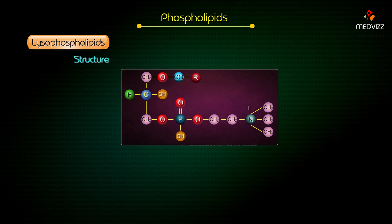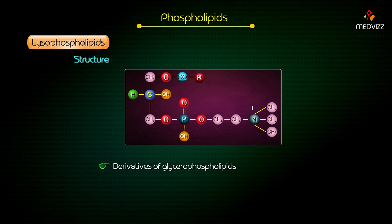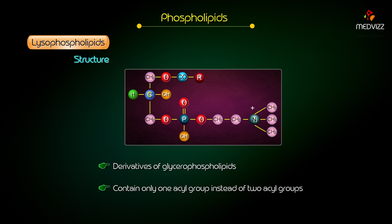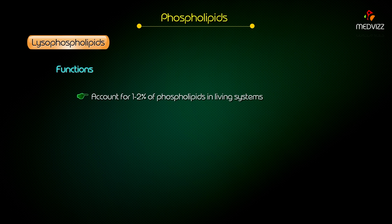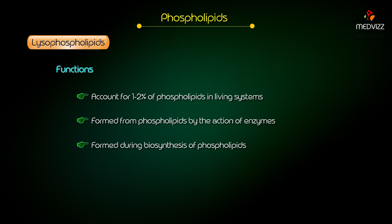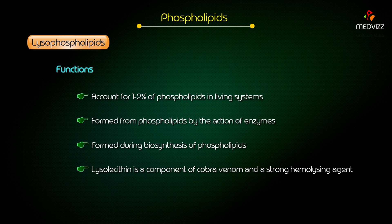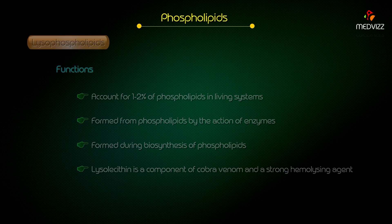Lysophospholipids — structure. They are derivatives of glycerophospholipids and contain only one acyl group instead of two acyl groups. Function: they account for 1–2% of phospholipids in living systems. They are formed from phospholipids by the reaction of enzymes and are formed during biosynthesis of phospholipids. Lysolecithin is a component of cobra venom and a strong hemolyzing agent.